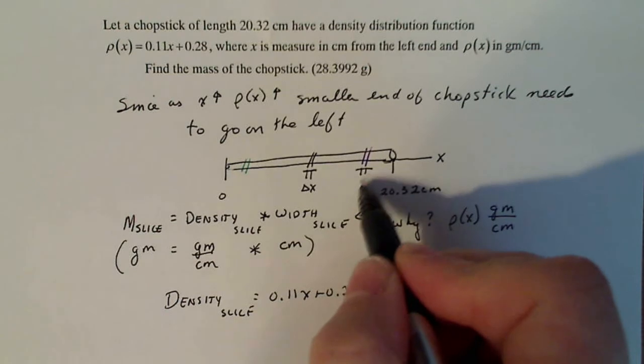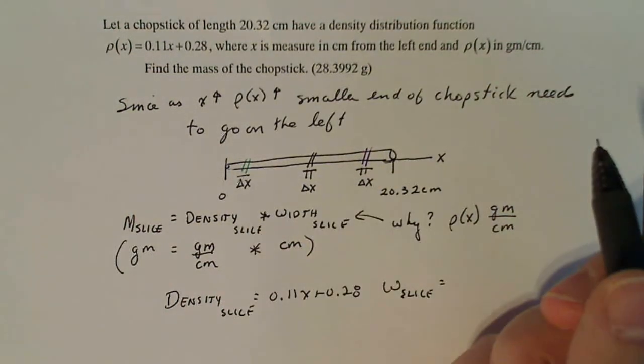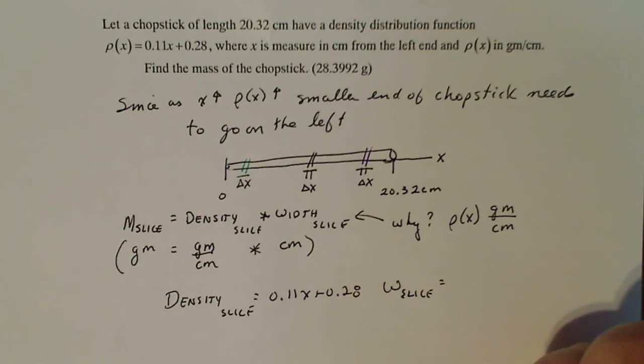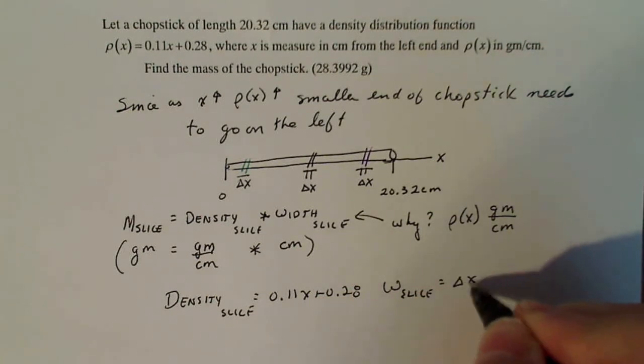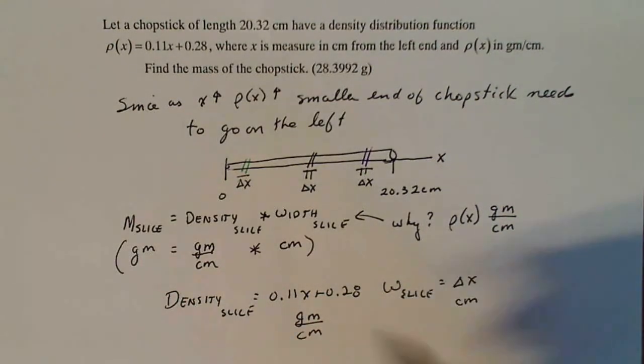You can call this length here also Δx. This length here doesn't matter where you put your slice - the width of every slice is going to be Δx, a very small number. And Δx unit of measure is in centimeters. Density is grams per centimeter.